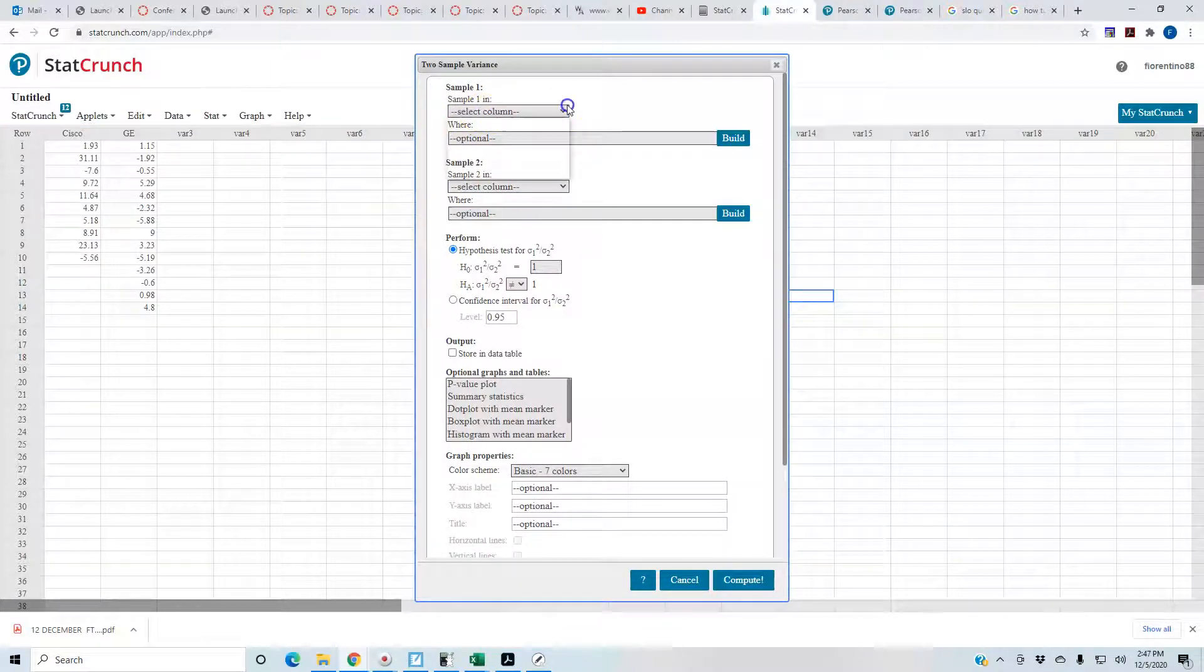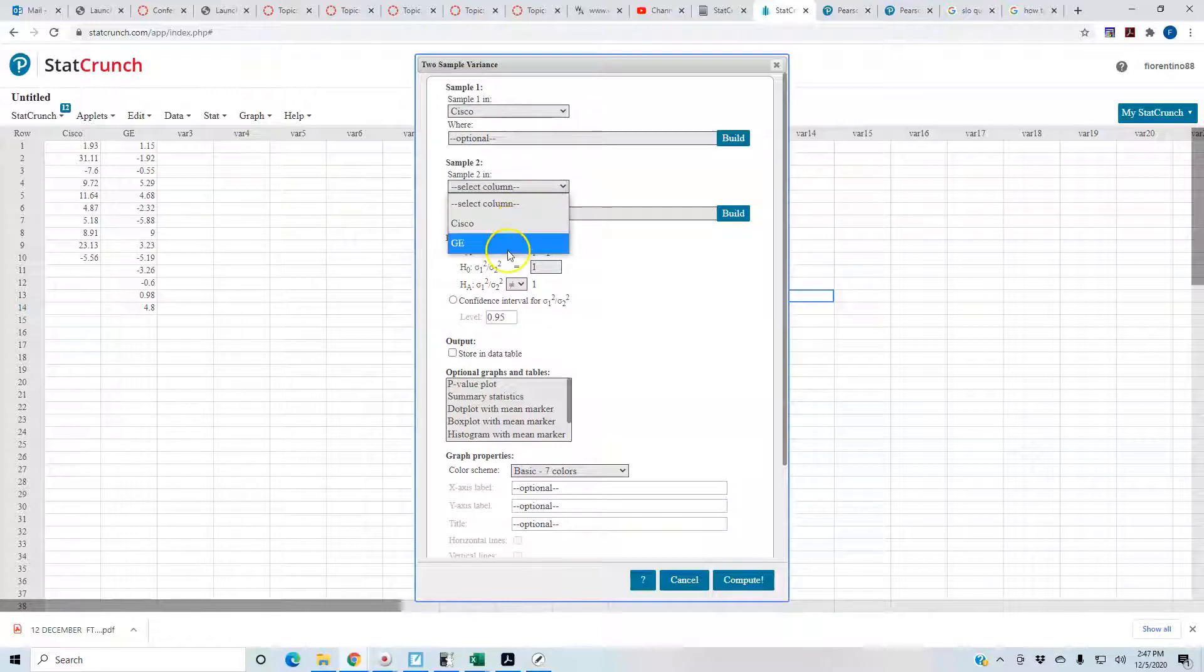Sample one is going to be the first column, which is Cisco. Sample two is the second column, which is GE.